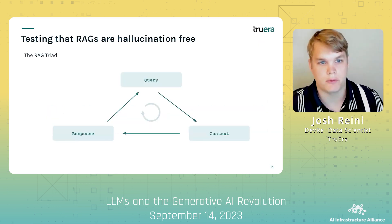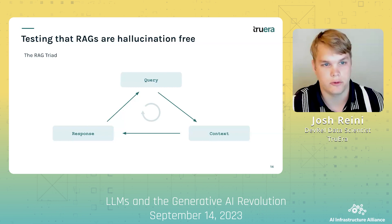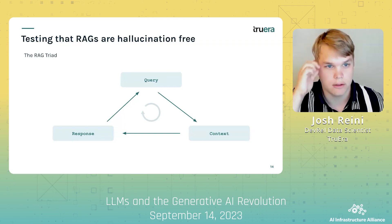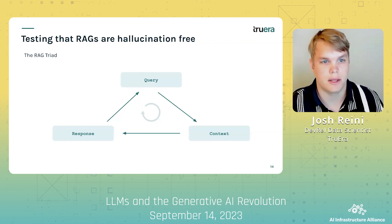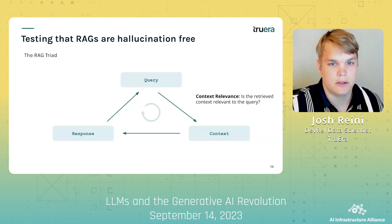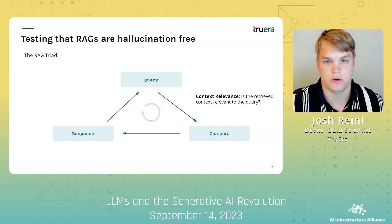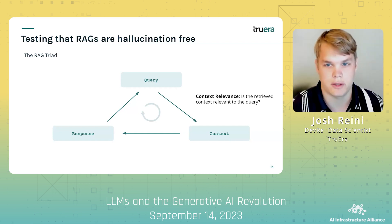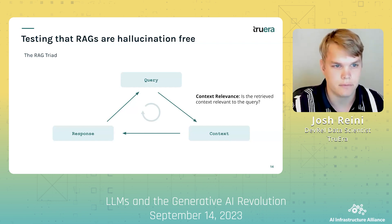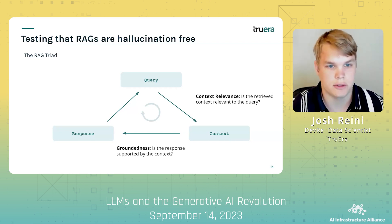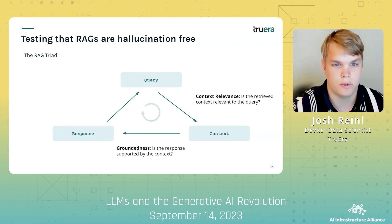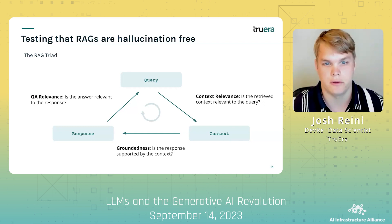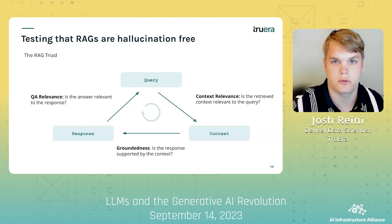So how do we go about testing that our RAGs are not hallucination-free? We can attack this problem with what we call the RAG triad. In the first leg of the triad, we can check context relevance to make sure we are retrieving context that will be useful to answer our query. Next, we can check to ensure that our final response is fully supported by evidence from that context. And last, we need to check that our final app's response is relevant to the original user's query.